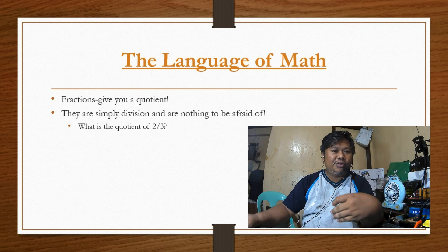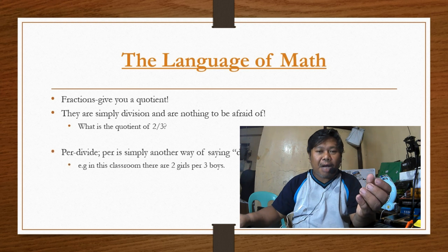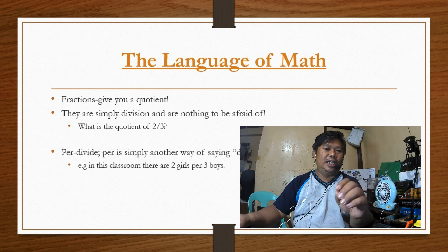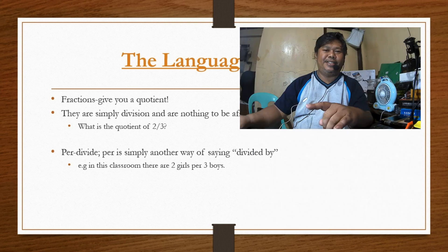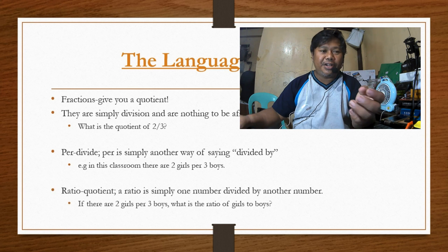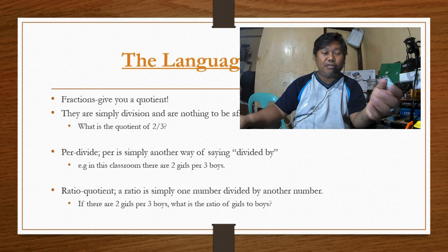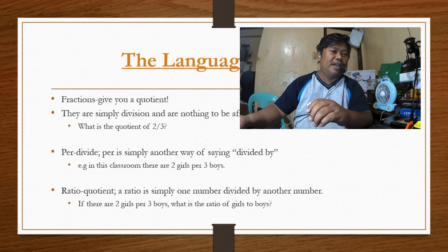"Per" is simply another way of saying divided by. For example, in a classroom there are two girls per two boys. Ratio means one number divided by another number. If there are two girls per three boys, the ratio of girls to boys is 2 to 3.